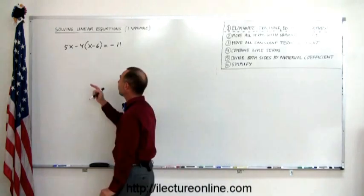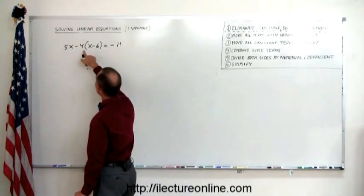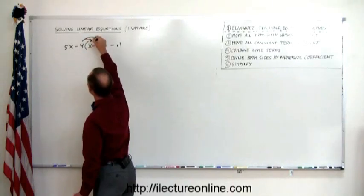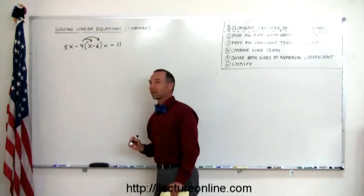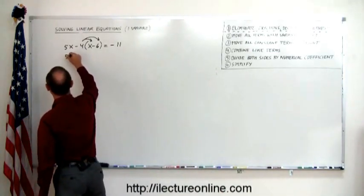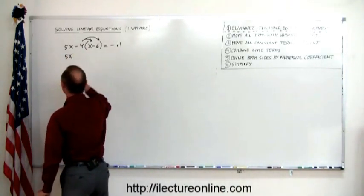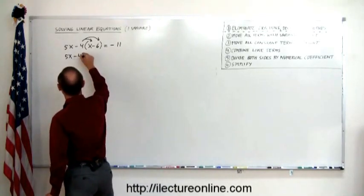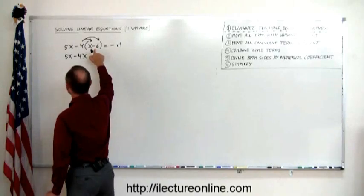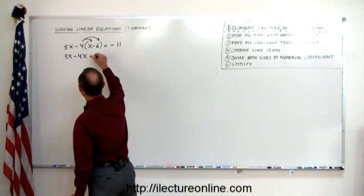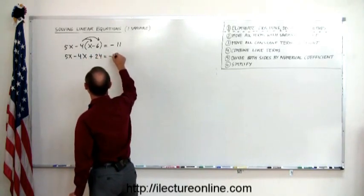Typically what that means is we have a number multiplied with everything inside of parentheses. That means we need to distribute the negative 4 over the x and the minus 6. So let's do that first. We have 5x. Now we have a minus 4 times x, which is minus 4x. And we have a minus 4 times a minus 6. Remember when we multiply a negative times a negative, we get a positive. So that's a positive 24 equals minus 11.